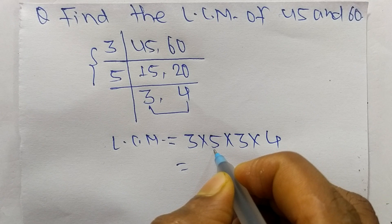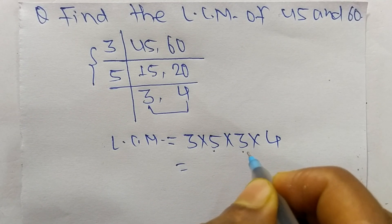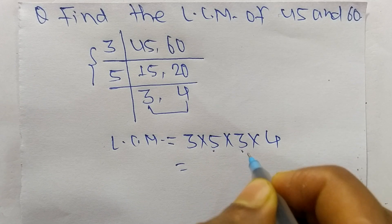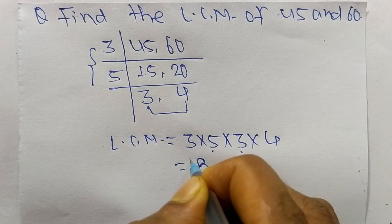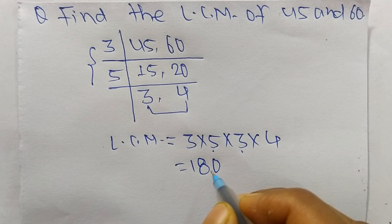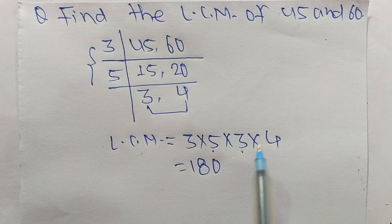So 3 times 5 equals 15. 15 times 3 equals 45. 45 times 4 equals 180. So 180 is the LCM of 45 and 60.